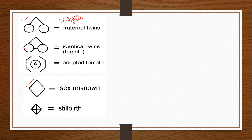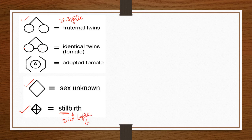Stillbirth — already studied in reproductive health — means the individual died before birth, inside the mother's womb. The fetus dies before delivery and this is represented with the stillbirth symbol.